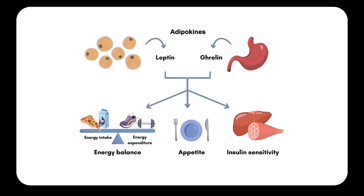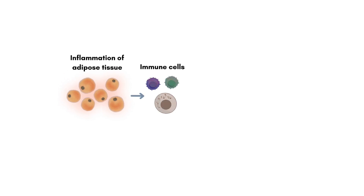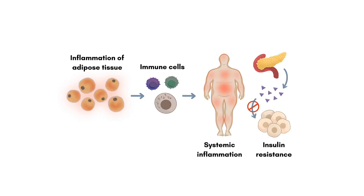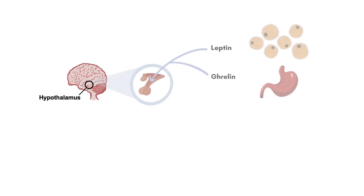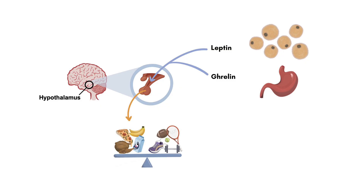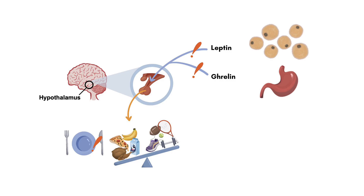Inflammation in adipose tissue may lead to the infiltration of immune cells, such as macrophages, which exacerbate local and systemic inflammation, further contributing to insulin resistance and other obesity-related complications. The hypothalamus also plays a critical role in the regulation of energy balance and appetite. It receives signals from peripheral hormones, such as leptin and ghrelin, and responds by modulating appetite and energy expenditure. In obesity, the normal function of these hormonal signals may be impaired, leading to dysregulated appetite control and a perpetuation of weight gain.